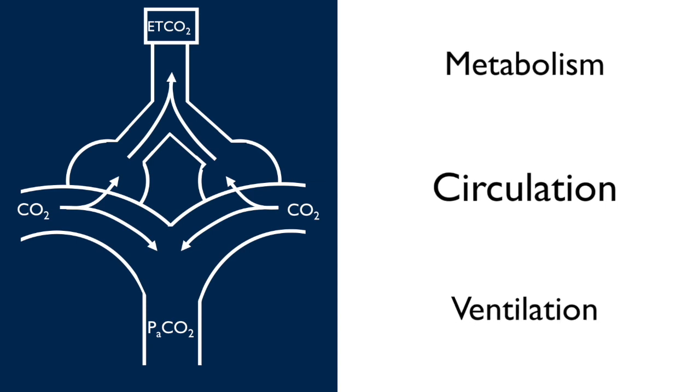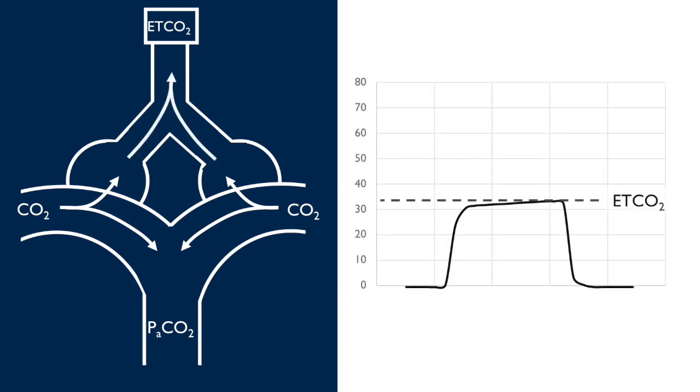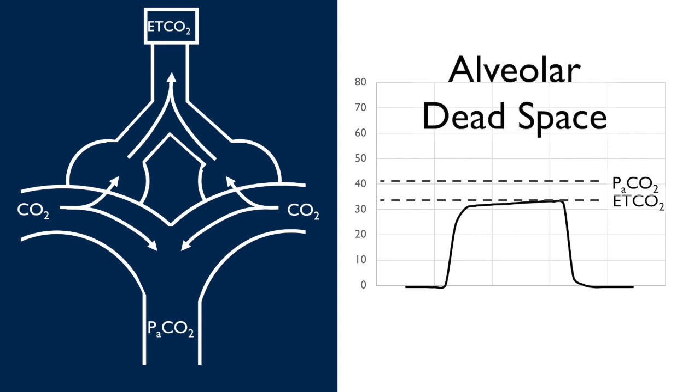Circulation can be more of a wild card and can actually make the end-tidal and arterial CO2 go in opposite directions. You see, end-tidal CO2 tends to be a little bit less than arterial CO2, and this gap can increase any time we decrease the pulmonary perfusion or add alveolar dead space.